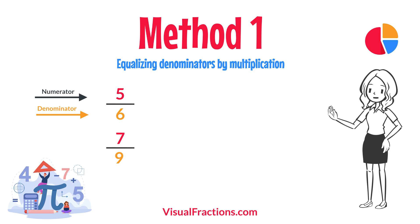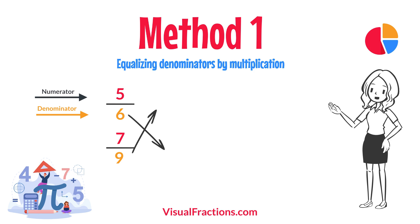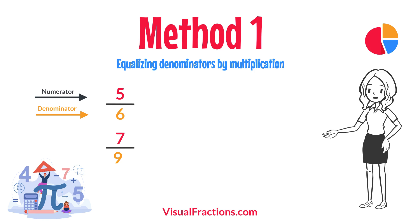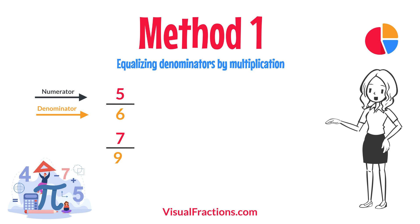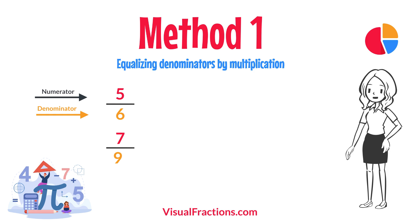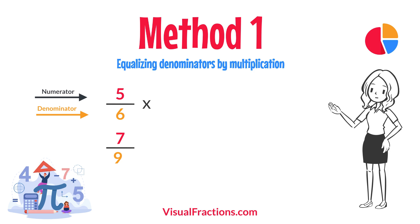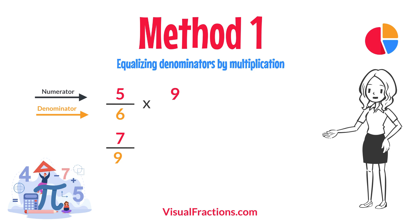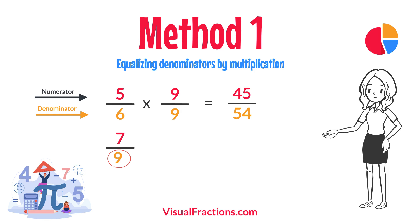First, let's equalize the denominators by multiplying each fraction's numerator and denominator by the other fraction's denominator. This method works by using the denominators of each fraction to create a common denominator, allowing us to compare the fractions directly. For 5 sixths, multiply both the numerator and the denominator by 9 — the denominator of 7 ninths. This gives us 45 54ths.